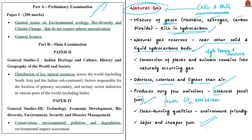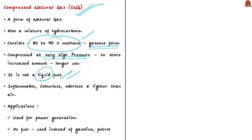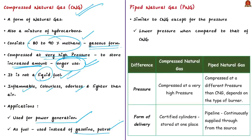CNG is a form of natural gas — a mixture of hydrocarbons consisting of approximately 80–90% methane in gaseous form. CNG is not a liquid, and therefore not a liquid fuel. This natural gas is compressed at very high pressure to store an increased amount of gas in a given space, allowing it to be used for a longer period. CNG is inflammable, lighter than air, colourless, and odourless. It is mainly used for power generation and as a fuel in place of gasoline or petrol, but only in CNG-based vehicles.